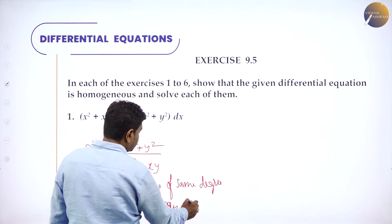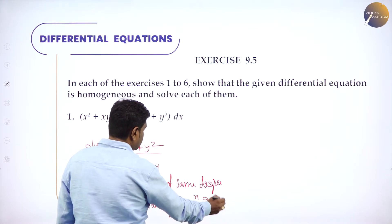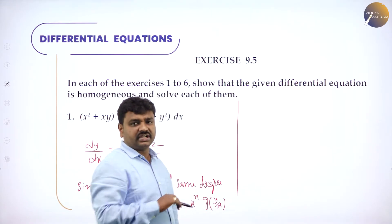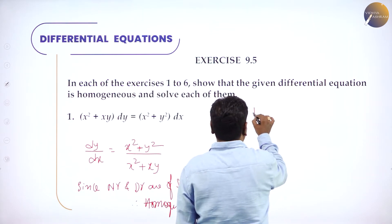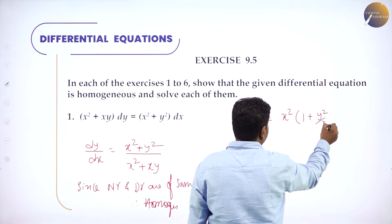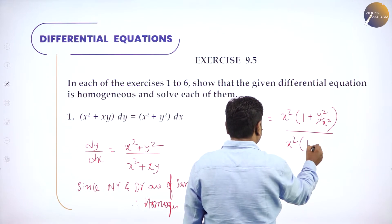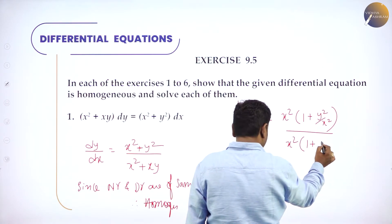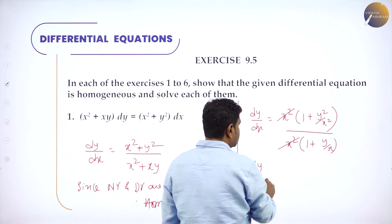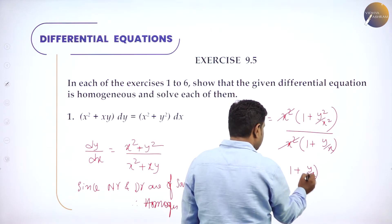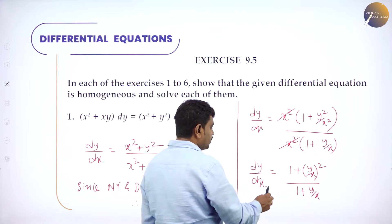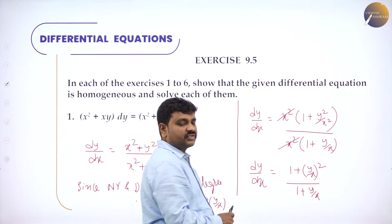We can write it further as x-power-n times g(y/x). The method is simple: take the highest degree term common. dy/dx = x-squared times (1 + y²/x²) over x-squared times (1 + y/x). The x-squared cancels, so dy/dx = (1 + (y/x)²) / (1 + y/x). This is homogeneous of degree 0.